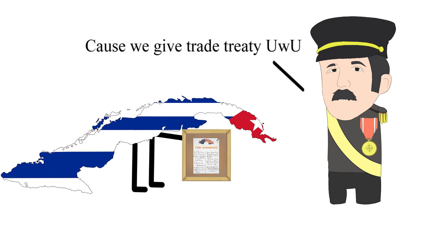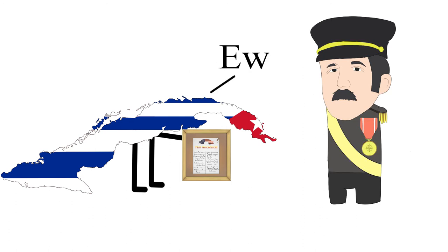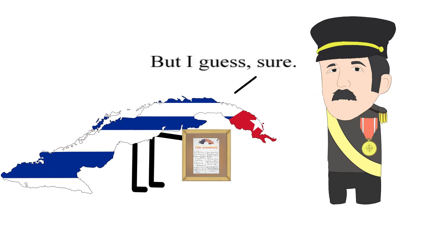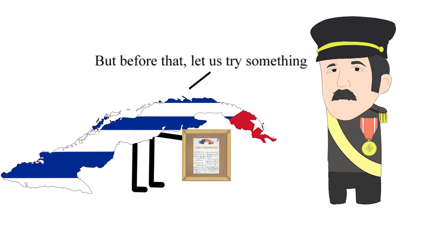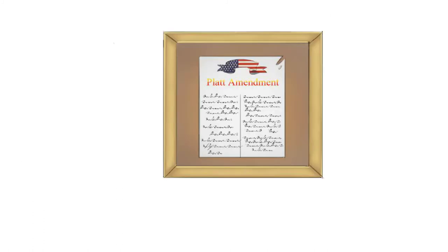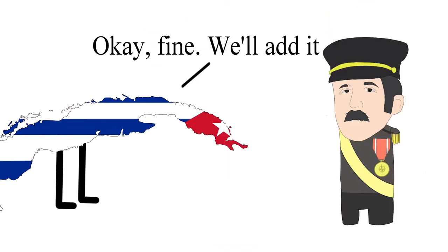But the United States government promised them a trade treaty that would guarantee Cuban sugar exports access to the U.S. market. After several failed attempts by the Cubans to reject or modify the terms of the Platt Amendment, the Cuban Constitutional Convention finally succumbed to American pressure and ratified it on June 12, 1901.